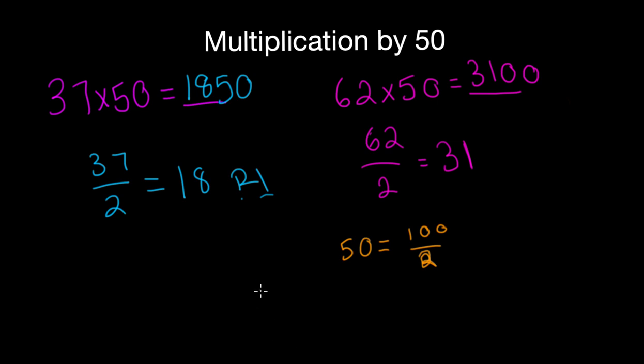So you're taking 62 and multiplying it by 100 divided by 2. Then you divide here. You get 31 times 100 is equal to 3100. And so that's how we're getting this trick, because 50 is equal to 100 divided by 2.